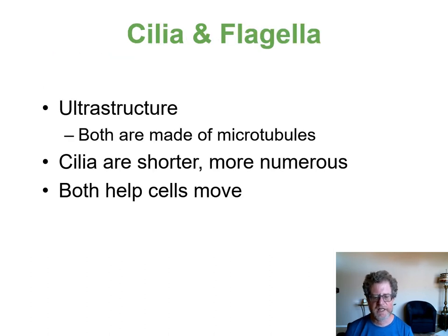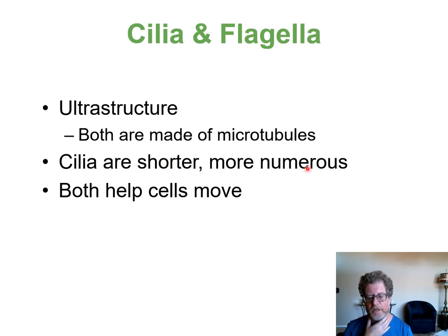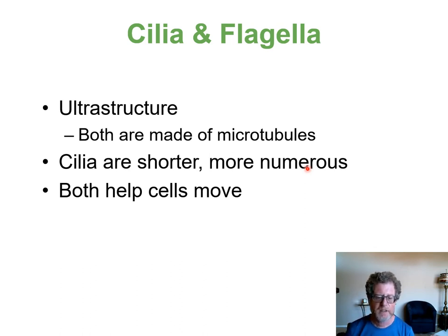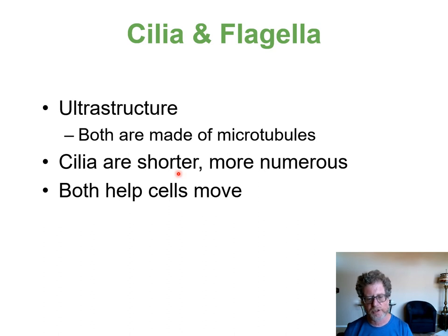Cilia and flagella are organelles made of microtubules found outside the cell, in both prokaryotes and eukaryotes. Cilia are shorter and more numerous — in our trachea, cilia wave to keep dirt out of the windpipe. Flagella are longer, like those on sperm, beating and waving to move the cell. Both are involved in movement.